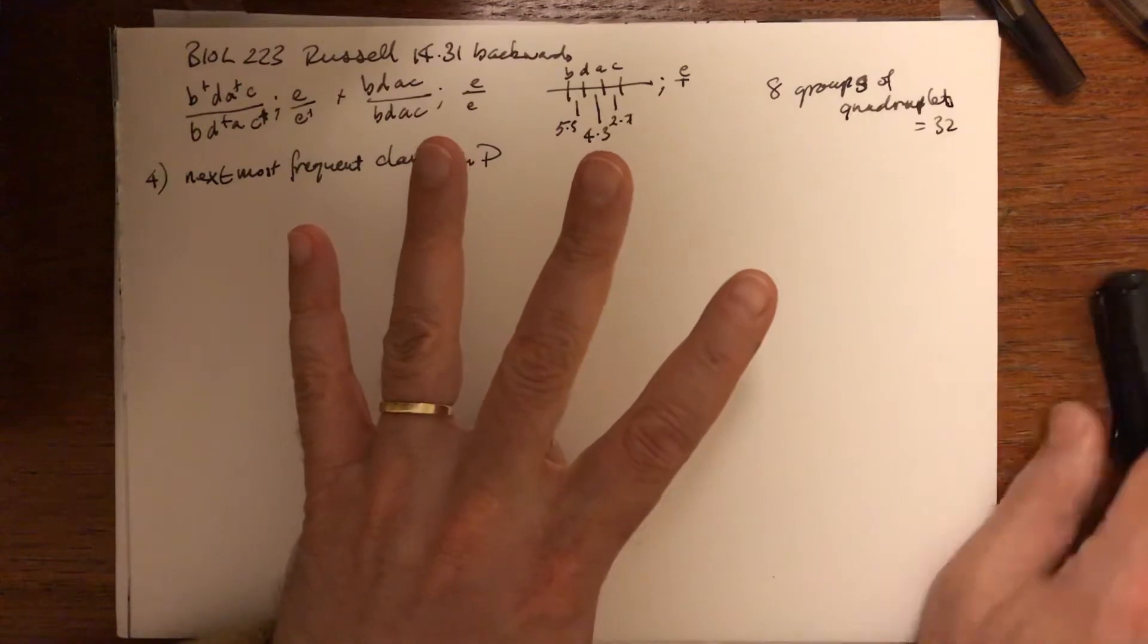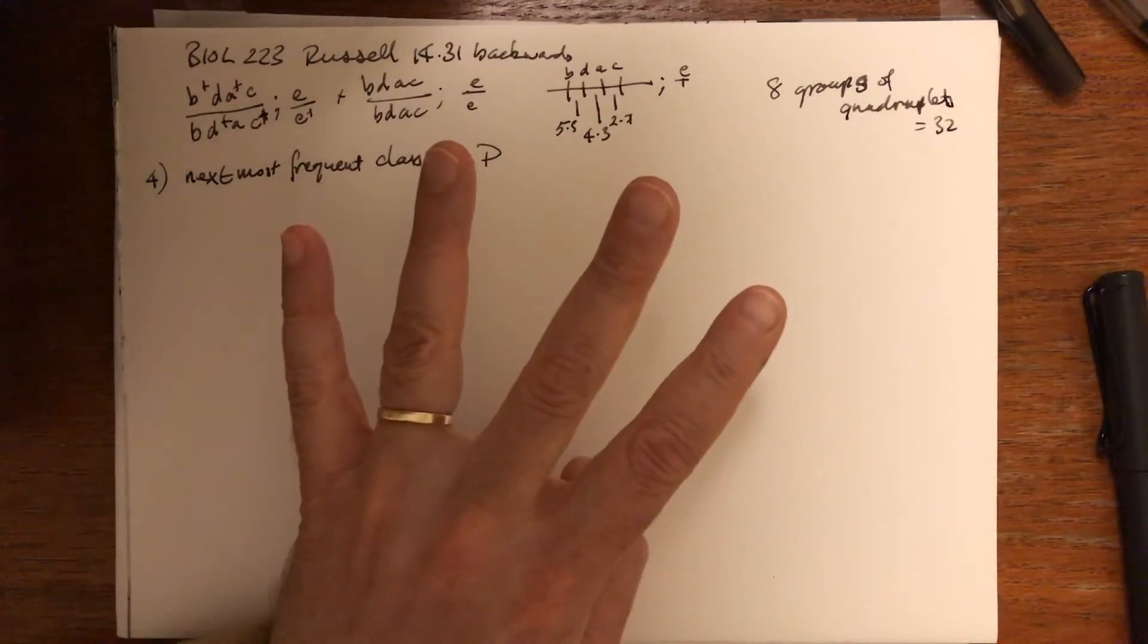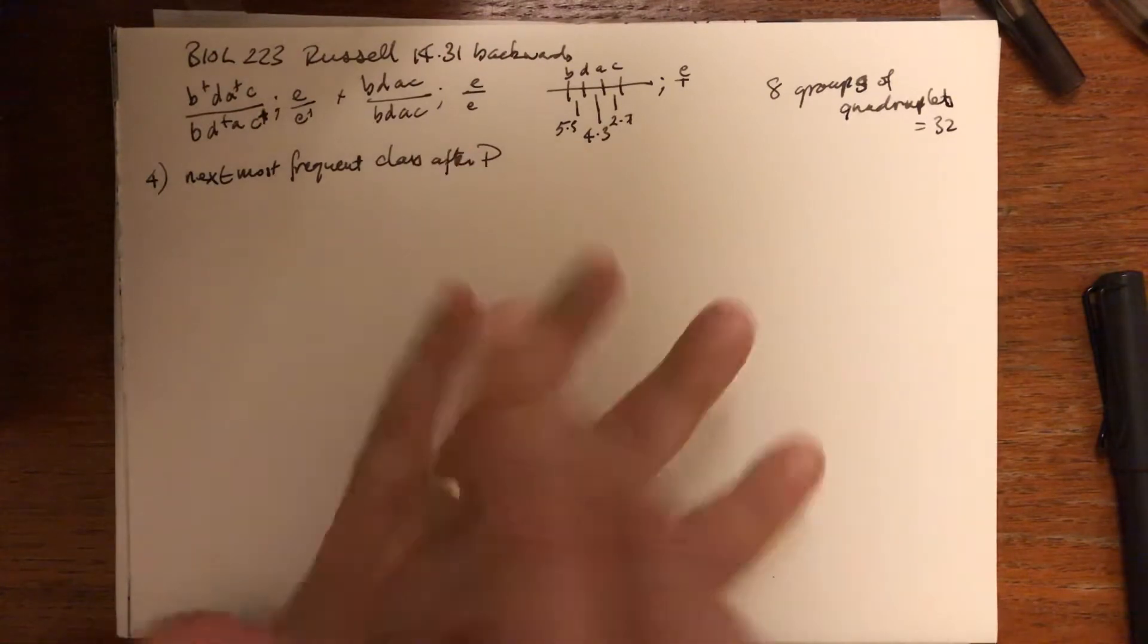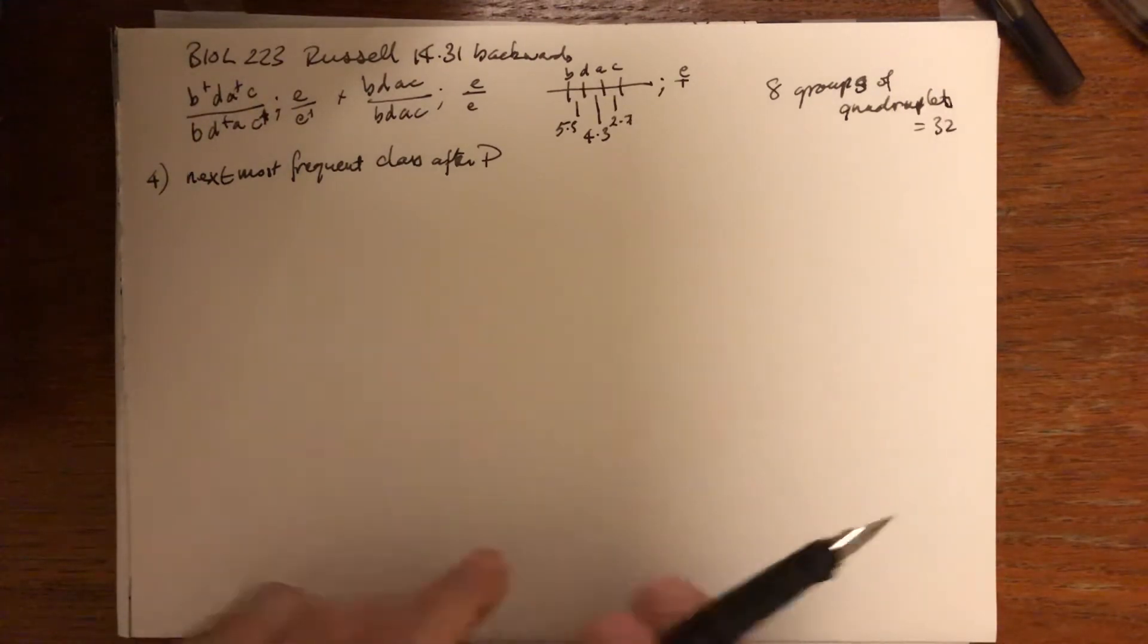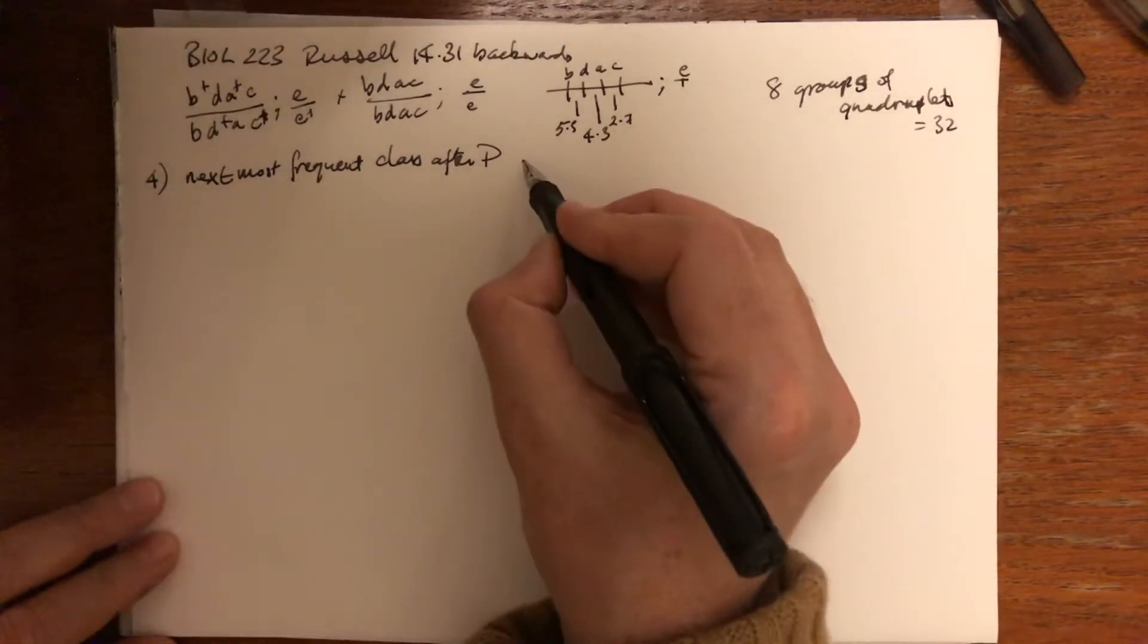So there's three of those single crossovers. We can also have double crossing over, double crossing over, double crossing over—so there are three double crossovers—and one triple crossing over. After parental, we expect the most frequent class is going to be single crossing over between the adjacent loci that have the greatest distance.